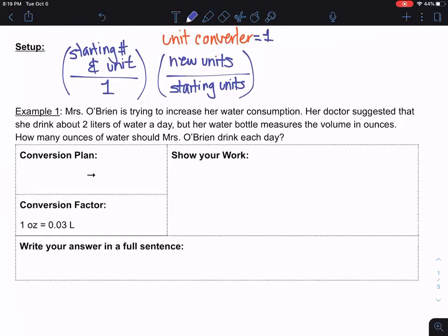In our first example, Ms. O'Brien is trying to increase her water consumption and her doctor suggested that she drink about two liters of water every day. However, her water bottle measures the volume in ounces. So how many ounces of water should Ms. O'Brien drink each day? So the first thing I want to do is pick out the things that are important in the problem, and I want to make something that I like to call a conversion plan. What am I starting with and where am I going? So in the problem, I see that I have two liters and I have ounces. So I'm starting with two liters and I'm trying to get to some number that has the unit ounces.